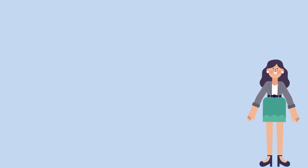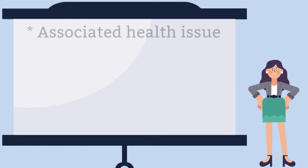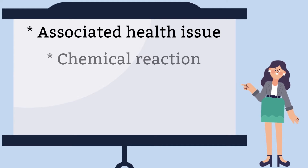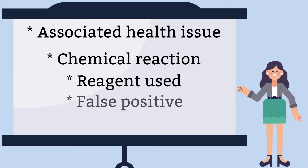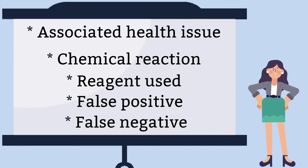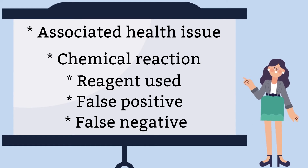Now that the general information is out of the way, we can go over each reaction in a little bit more detail. For each test, I will cover health issues that are associated with it, chemical reactions, reagent use, and what can cause false positive and false negative results for each of these tests. We will go in the order that we have to read the reactions, but keep in mind that the order may vary a little depending on which manufacturer you use.